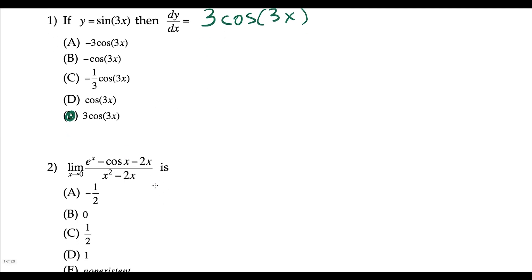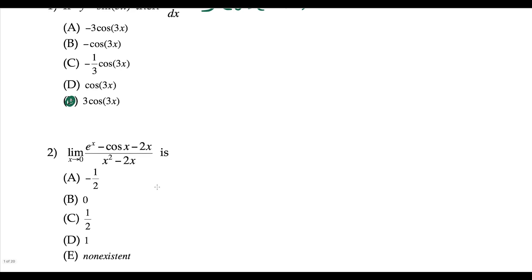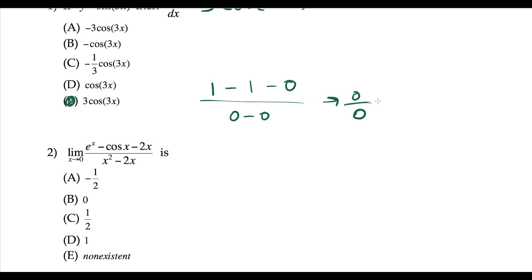For the next question, this looks like a L'Hôpital question but we have to be careful. I would always try to plug in first. If you plug in 0, you're going to get 1 minus cosine of 0, which is 1 minus 2 times 0, over 0 minus 0 — it's 0 over 0. So in the free response don't write this, but in multiple choice your notation could be off and it won't matter. We're going to use L'Hôpital and do the derivative of the top and the bottom.